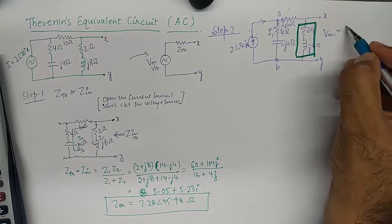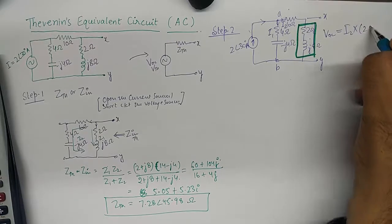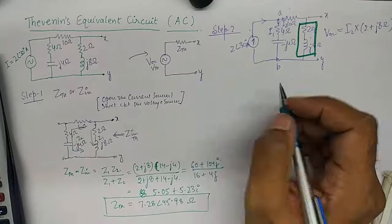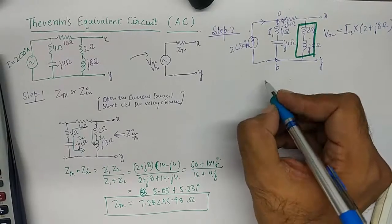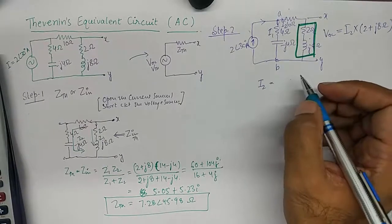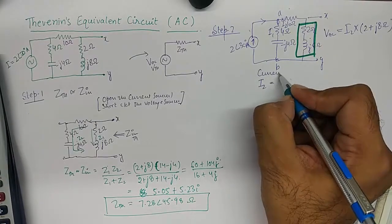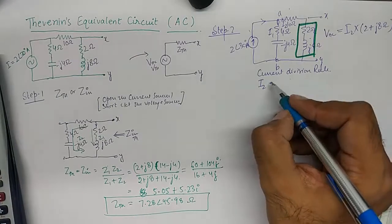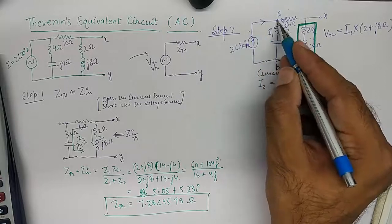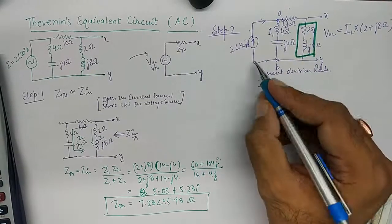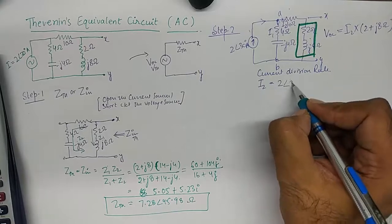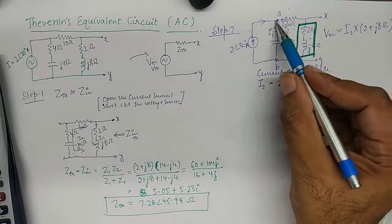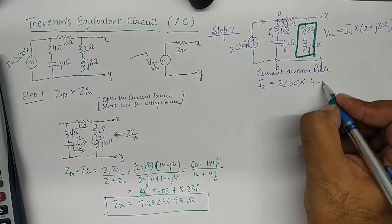So VOC will be I2 into 2 plus J8. And how can I find I2? I2 is pretty simple to find because I have been given the total current. I'll use current division rule. And the current division rule says I2 will be equivalent to the total current entering the node. The total current is the source current, nothing else. It's 2 angle 30, multiplied by the impedance in the other branch. The impedance in the other branch is 4 minus J4.